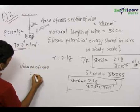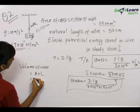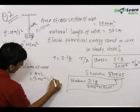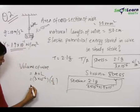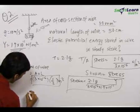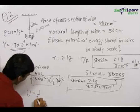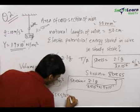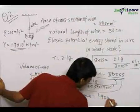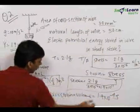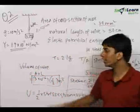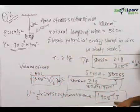The volume of the wire equals A × L (natural length) = 3 × 10⁻⁶ m² × 0.5 m. On multiplying stress, strain, and volume together and then taking half, we get the elastic potential energy stored in the wire as ½ × stress × strain × volume = 1.9 × 10⁻⁴ joules. Substituting these three values gives the final answer: 1.9 × 10⁻⁴ joules.